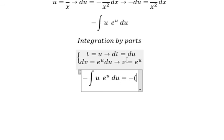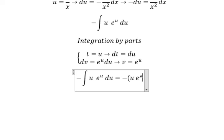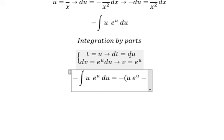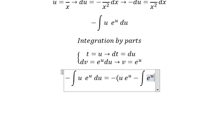So we have t multiplied by v. So we have ue to the power of u minus dt multiplied by v. So we have the integration e to the power of u du.